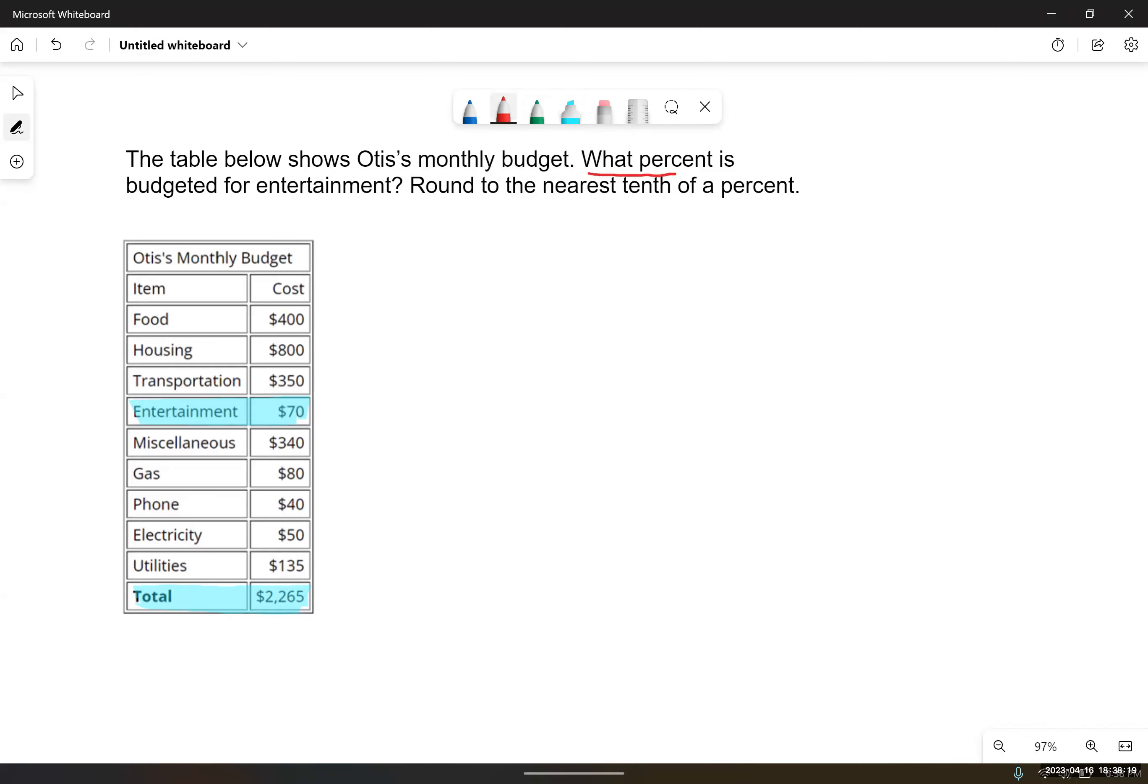All right, we're looking for a percentage here. The question is, what percent is budgeted for entertainment? So entertainment, we call this the part and the whole. The total would be the whole amount. When we convert this to an is of statement, we could say what percent of the total amount. So what percent of $2,265 is entertainment or 70? What percent of $2,265 is 70? Entertainment is the 70.